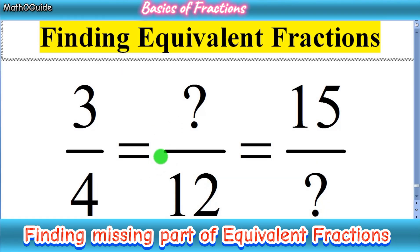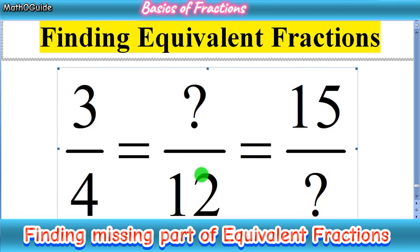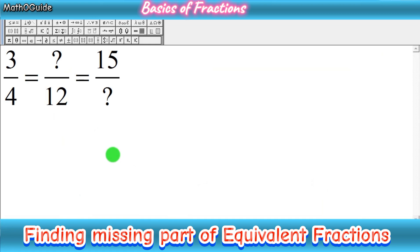Here we have a set of 3 equivalent fractions: 3 over 4 equals question mark over 12 equals 15 over question mark. So first of all you have to rewrite the given expression — 3 over 4 is equal to the missing number over 12, which is equal to 15 over the missing number.